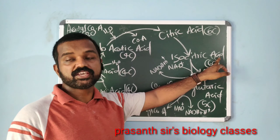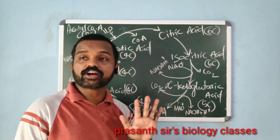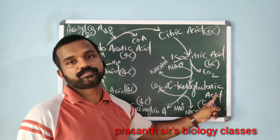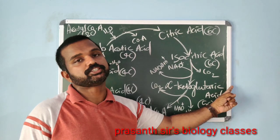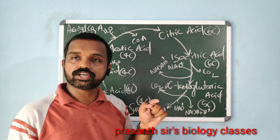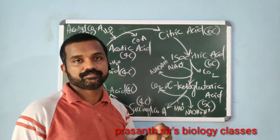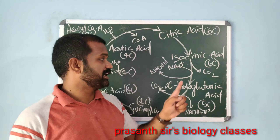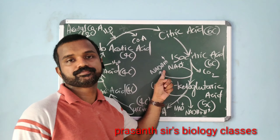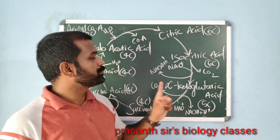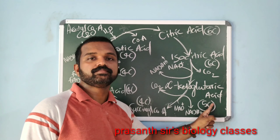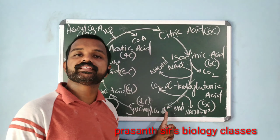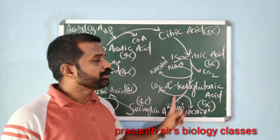The next step: isocitric acid is converted into a five-carbon compound named alpha-ketoglutaric acid. During this step, decarboxylation occurs, and oxidation also occurs — the removed hydrogen is accepted by NAD⁺ and it becomes NADH + H⁺. The next step: alpha-ketoglutaric acid is converted into a four-carbon compound named succinyl coenzyme A.